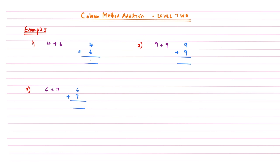The best way to show this is by example. We have a column here and we've been asked to add 4 and 6. It's been set up exactly as described in Level 1. We need to add 4 and 6 together — the answer is 10, so it's a number that's 10 or above, meaning it's two digits. We need to learn where to write these two digits, because the space underneath a column is just for one.